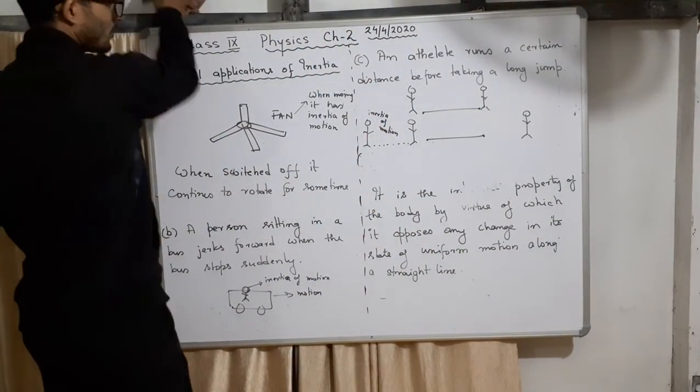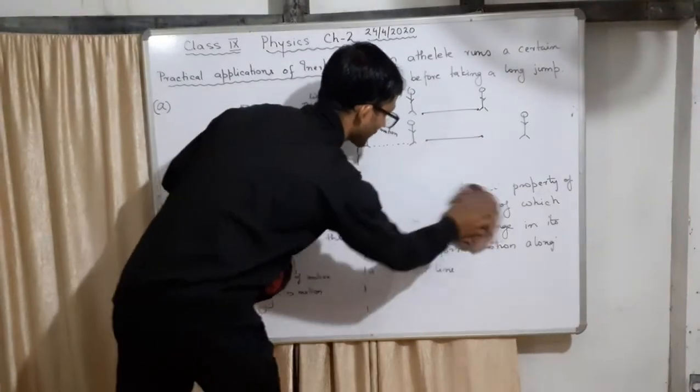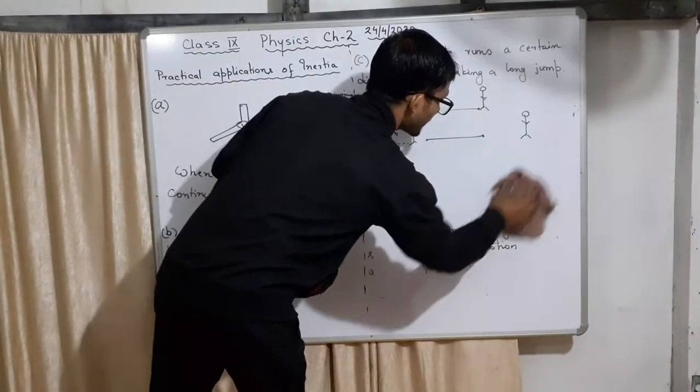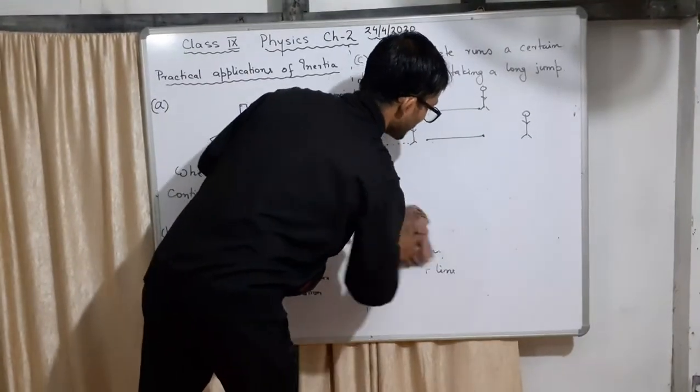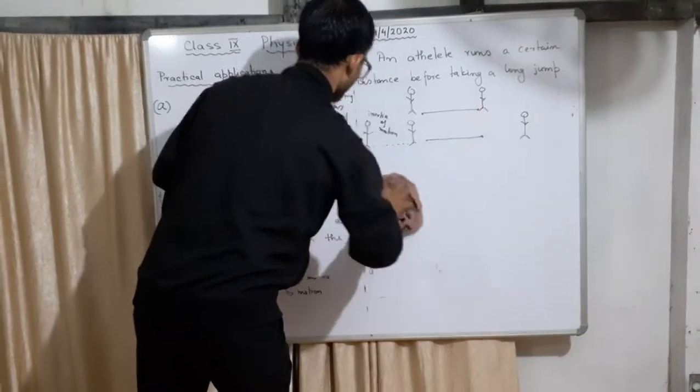Now the third one is inertia of direction. We have covered inertia of rest and inertia of motion, and now we move ahead to inertia of direction.